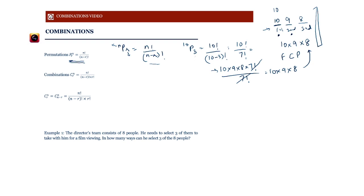Permutations involve distinct positions — first, second, and third — so order matters. For example, choosing people A, C, and D: placing them as A, C, D is different from A, D, C, because C is second in one case and D is second in the other. These are two different outcomes, which is why we need to arrange them. The FCP handles this naturally, so we'll use FCP for select-and-arrange scenarios.